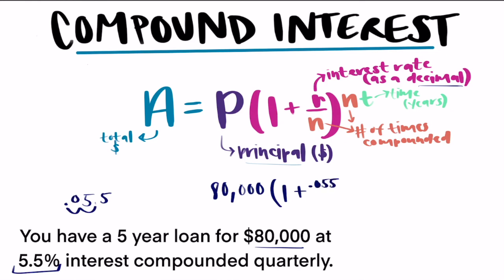And then we have to divide that by the number of times compounded per year, which it tells us they're being compounded quarterly. So that means four times a year.